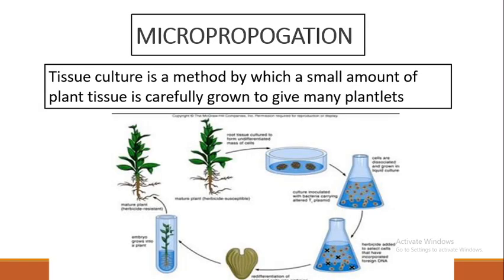With micropropagation, we have completed the entire topic of asexual reproduction. This video covers all aspects and types of asexual reproduction. If you don't understand something, please rewatch the video or contact me. Don't forget to subscribe and share, and we will eventually cover the entire biology syllabus chapter by chapter. Thank you.